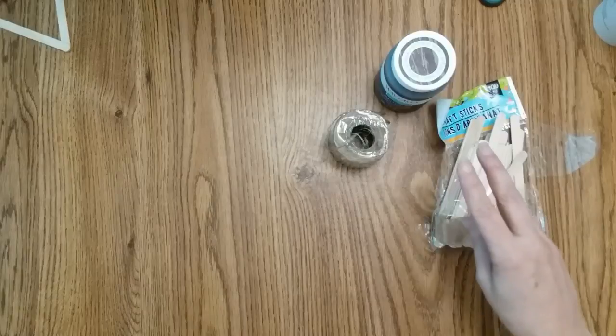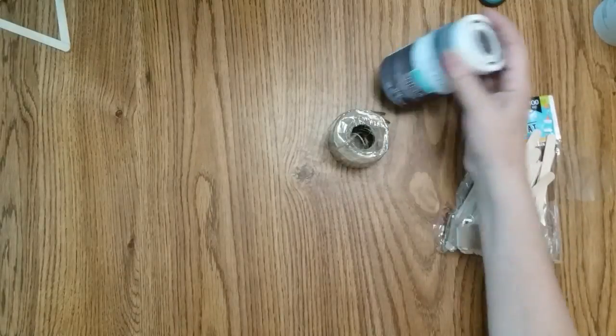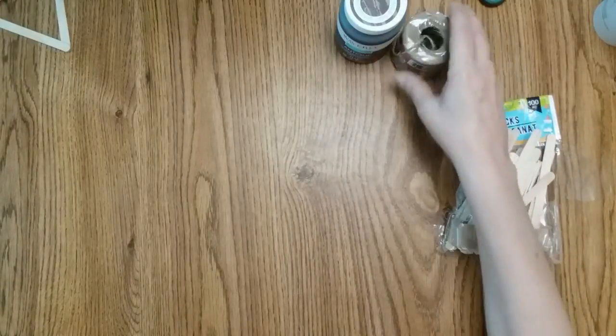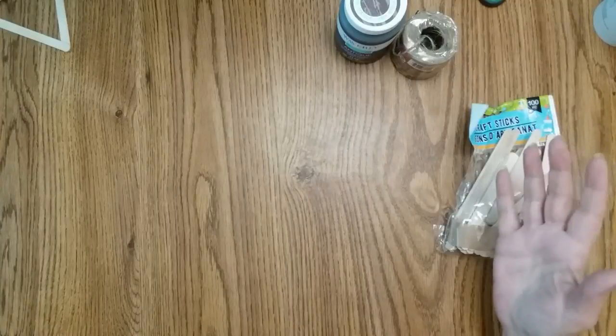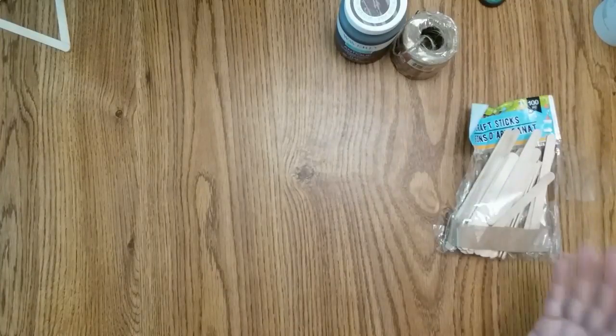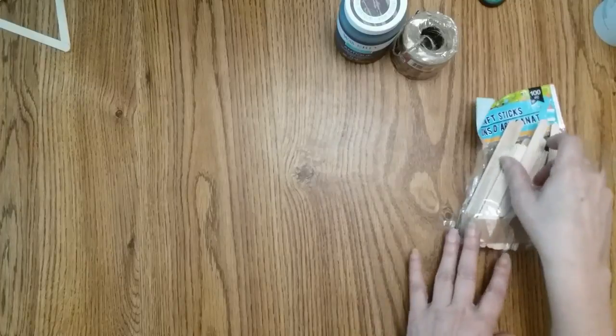For this next craft, you're going to need popsicle sticks, some antique wax, and some jute, and either wood glue or hot glue. I am using wood glue, the Elmer's wood glue, because I love that one.